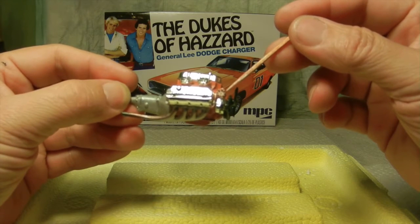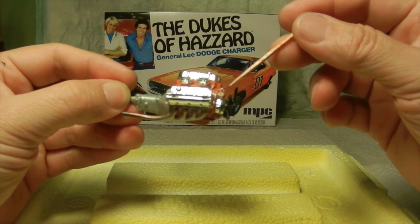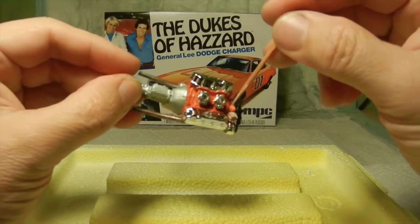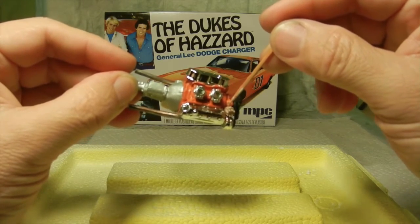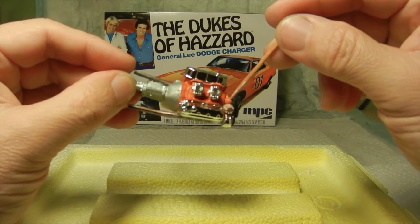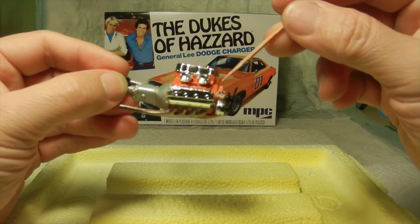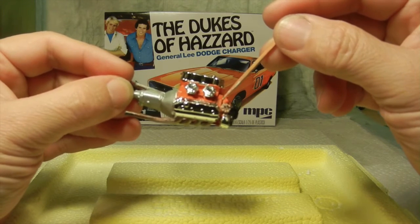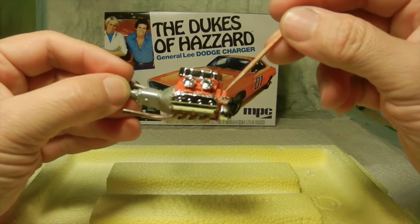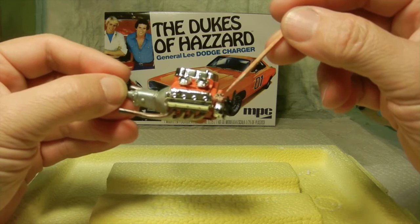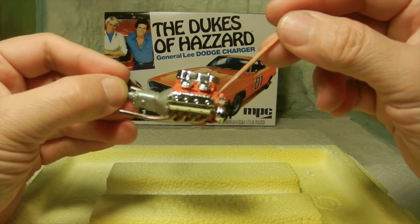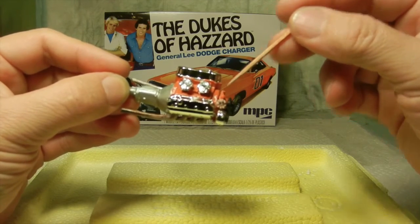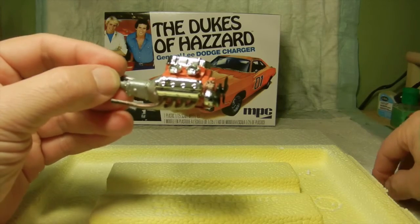So what I ended up doing was actually taking out my file again, and on the back side I flattened it out because the distributor cap is round. Part of the distributor cap I did file down to flatten it out a little bit so that it would slide over the locator pin and not interfere with the rest of the engine block. So that was one issue that was resolved.